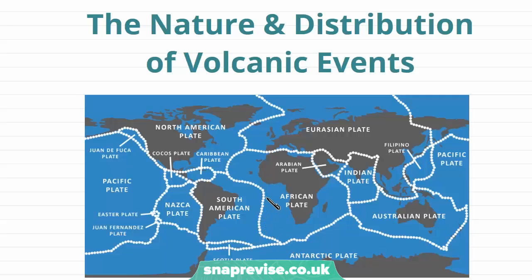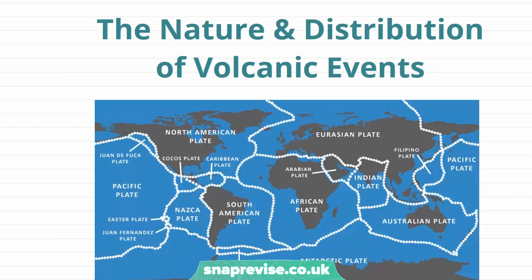Our plate margins are the borders between our plates, shown by these white lines here. However, volcanoes don't occur at all plate boundaries, only specific ones, and we're going to look at them in more detail. Our first kind are ocean ridges, and an example of a classic ocean ridge is the mid-Atlantic ridge, which is this line going up in the middle of the Atlantic, and we're going to look at why volcanoes occur here.